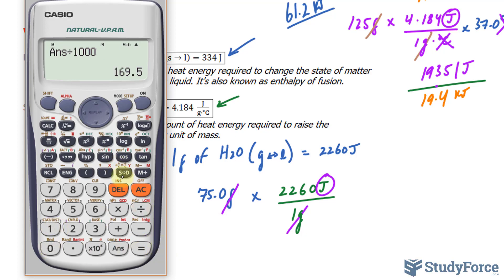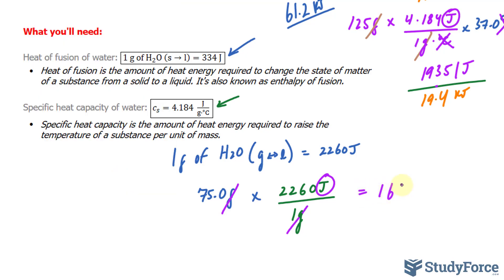So I'll make that into kilojoules by dividing by 1,000, and we get 169.5. This should be to three significant figures, so I'll just place a dot underneath the last significant digit. That's in kilojoules. That's our first of three calculations.